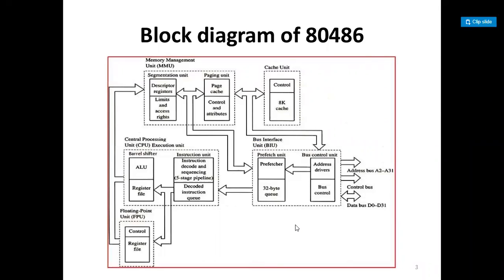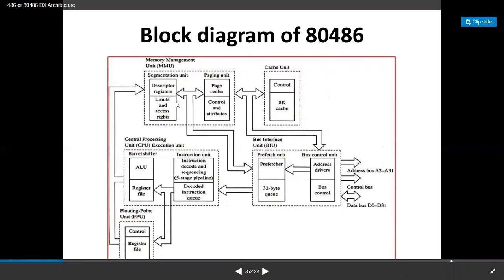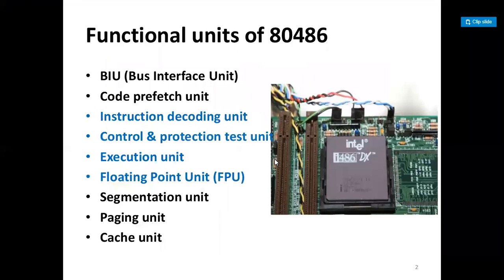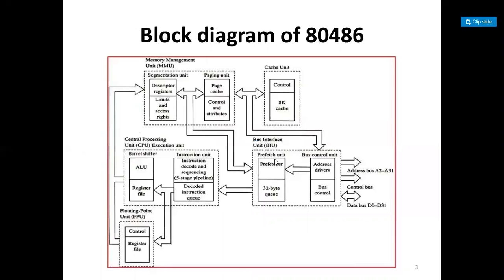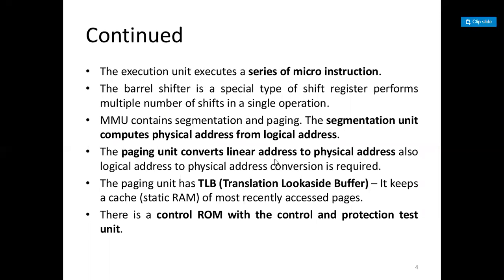The block diagram of the 80486 has a cache unit, paging unit, and memory management unit, divided into segmentation and paging units, and a CPU with execution unit, barrel shifter, instruction unit, floating point unit, and prefetch unit. The functional units of the 80486 are: BIU, code prefetch unit, instruction decoding unit, control and protection test unit, execution unit, floating point unit, segmentation unit, paging unit, and cache unit.